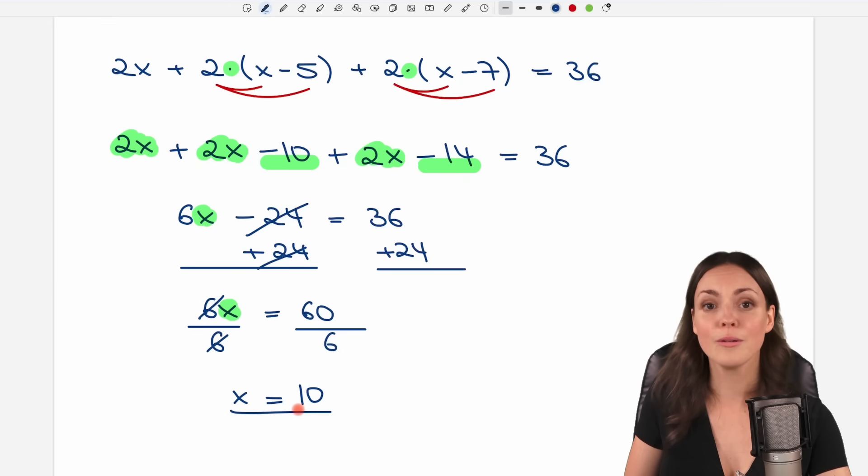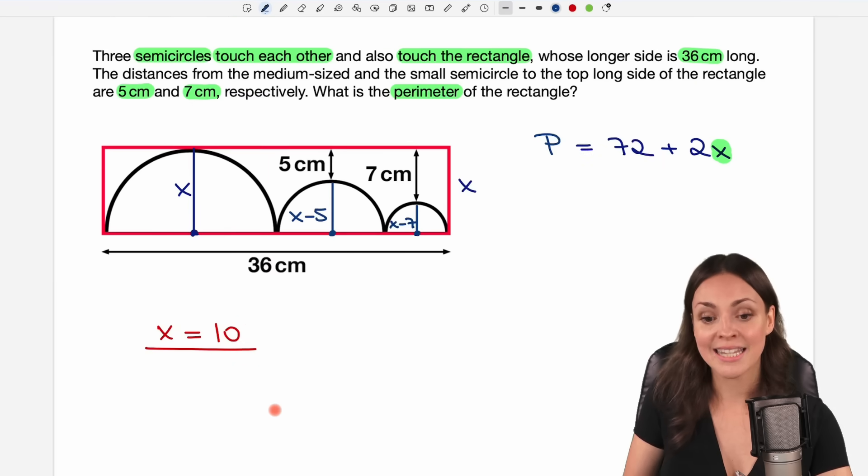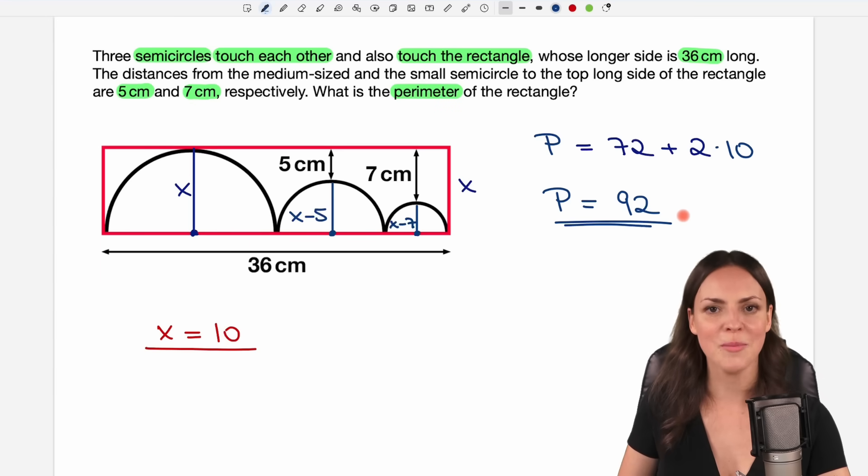This is not our perimeter but the length of our x. We needed it for our formula here so we can insert a 10 for our x. We have as a perimeter 72 plus 20 which equals 92 and we solved our problem.